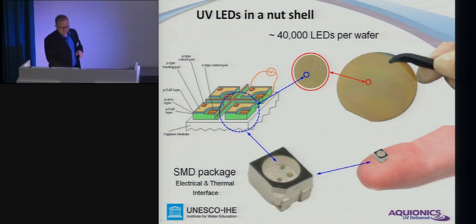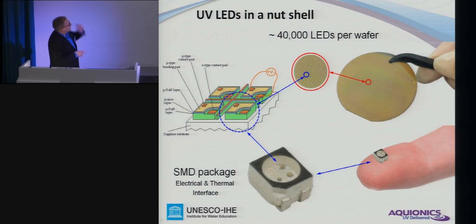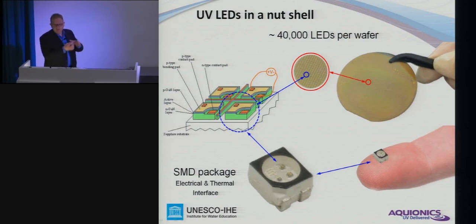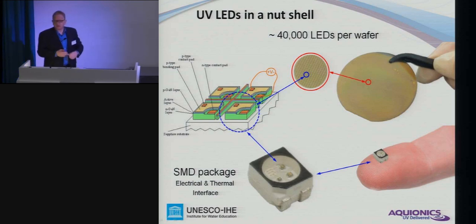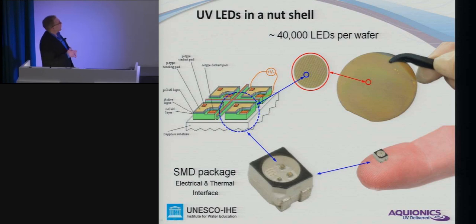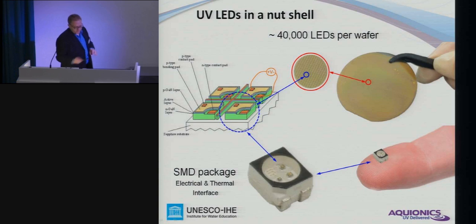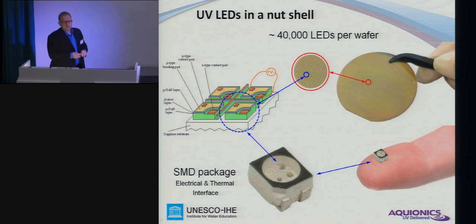In a nutshell — and I know we have some experts in the audience, so bear with me — LEDs are made of wafers of about 2 inches in size. Specialists cut about 40,000 LEDs out of this little plate and qualify them regarding intensity and wavelength. This process is called binning, so you can get different qualities of LEDs. To make them usable, they are applied to an SMB package, which allows electronic control and control of the thermal conditions of that component.